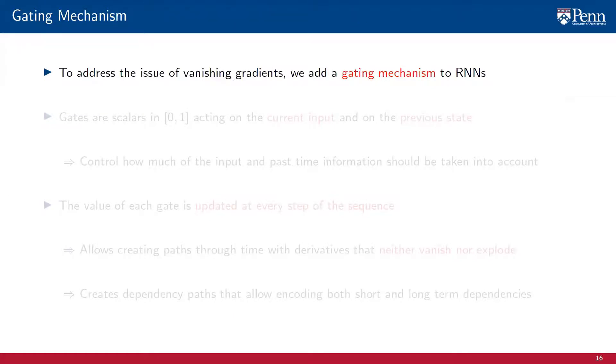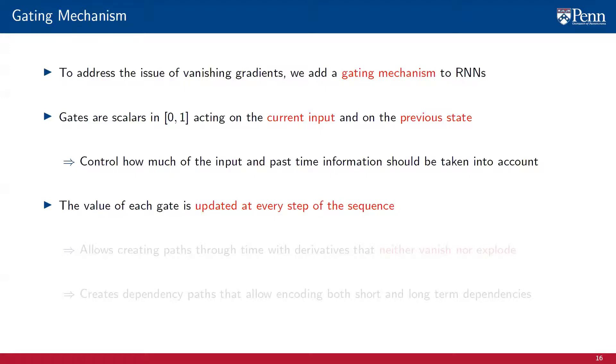To address this issue of vanishing gradients, we must add a gating mechanism to the recurrent neural network. Gates are scalars on the unit interval that act on the current input of the neural network x_t and on the previous hidden state of the network z_t. Gates control how much of the input signal and past time information encoded in the hidden state should be taken into account at each time instant. They are updated at every step of the sequence. And they are fundamental to address the issue of vanishing or exploding gradients because they allow the recurrent neural network to create paths through time that have derivatives that neither vanish nor explode. Through those gates, the RNN can then create dependency paths that allow encoding both short and long-term dependencies of the data sequence.